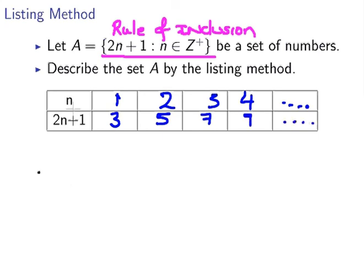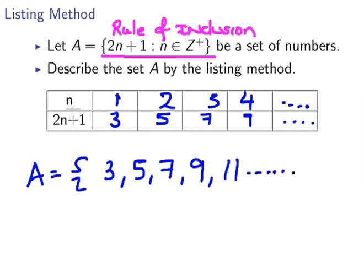and so on. So if we were to describe A by the listing method, we would write it like this. A equals 3, 5, 7, 9, 11, and so on.